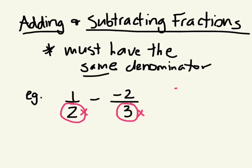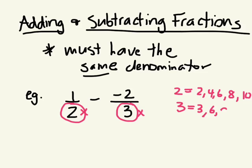We have to think of multiples of 2 and multiples of 3. Multiples of 2: 2, 4, 6, 8, 10. And multiples of 3 are 3, 6, 9, 12. So we can use 6, because 6 appears in both lists.